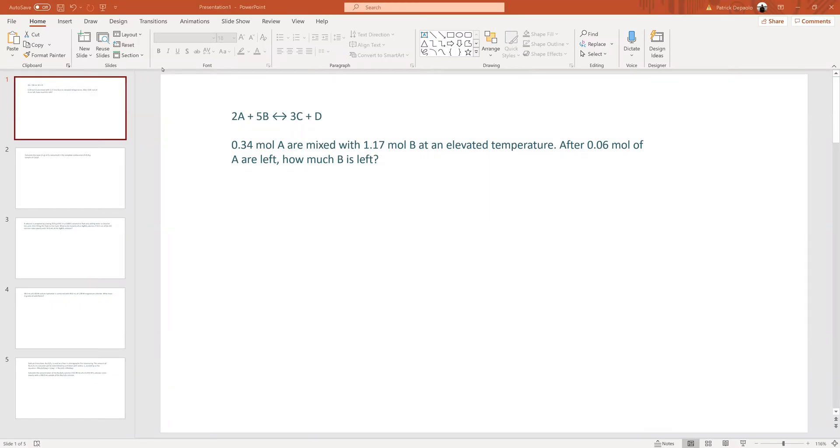So if you have an equation written 2A plus 5B yields 3C plus 4D, where A, B, C, and D are random compounds, and if you have 0.34 moles of A mixed with 1.17 moles of B at an elevated temperature, after 0.06 moles of A are left, how much B is left?